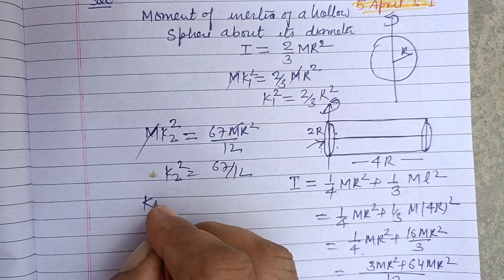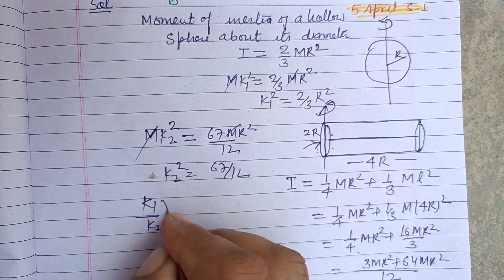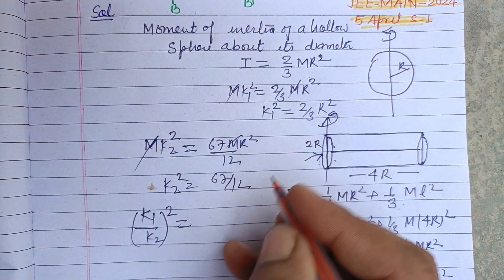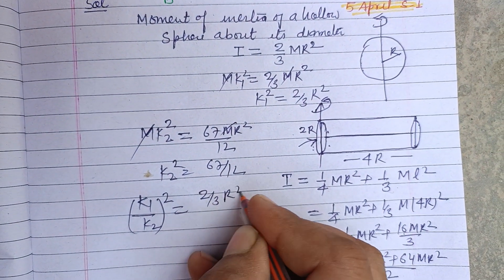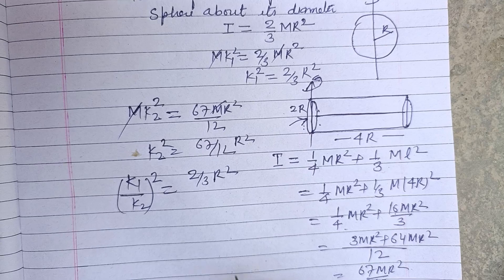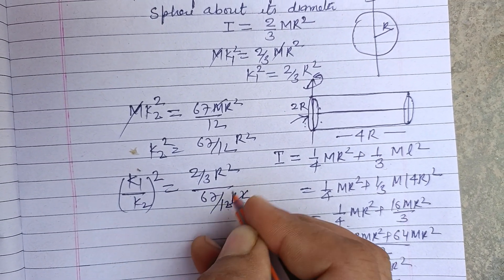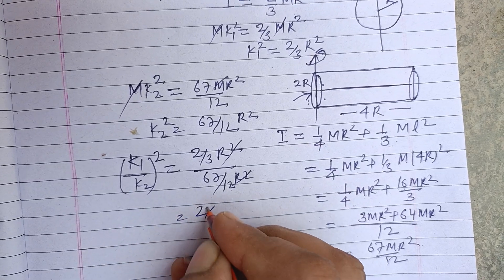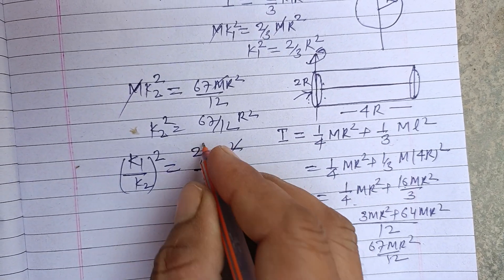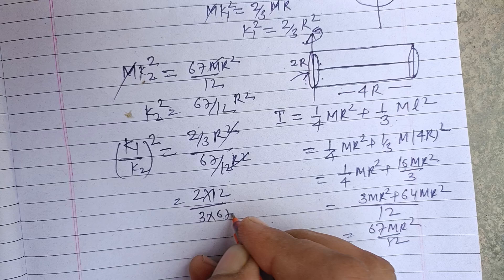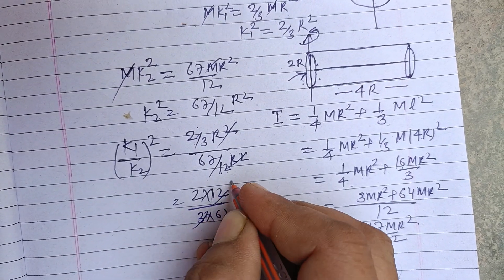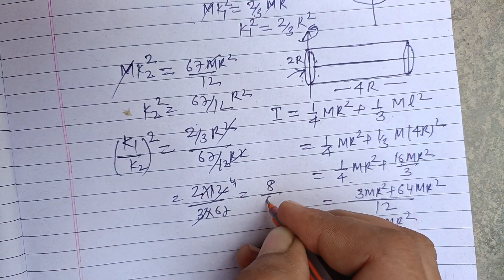So we take (k₁/k₂)² which is (2/3 R²) divided by (67R²/12). So 2×12 over 3×67, R² cancels. This is 24/201, which simplifies to 8/67.